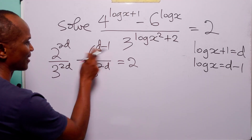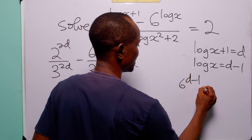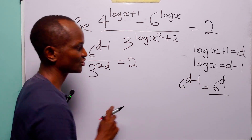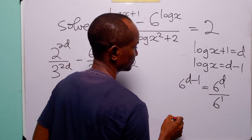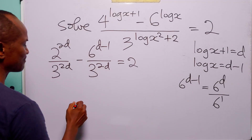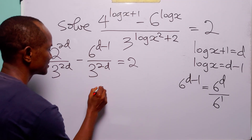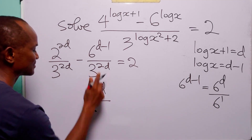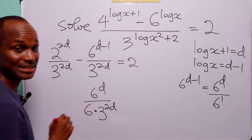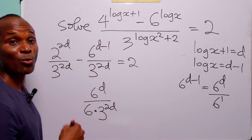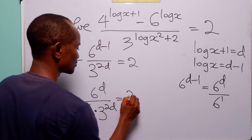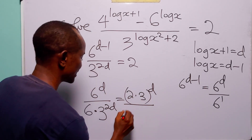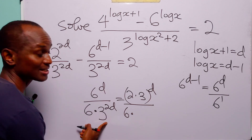Remember that 6 to the power d minus 1 can be written as 6 to the power d divided by 6 to the power 1. So this fraction becomes 6 to the power d divided by 6 times 3 to the power 2d. Now since 6 equals 2 times 3, we substitute that in.